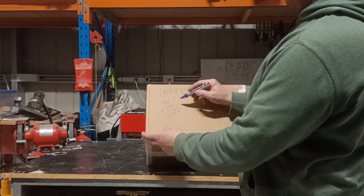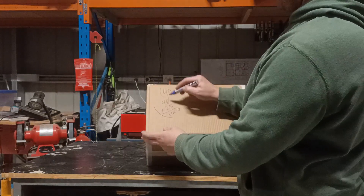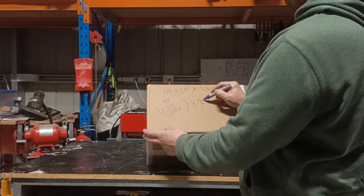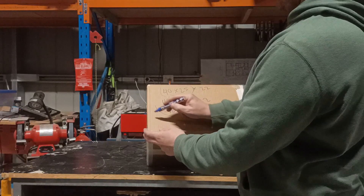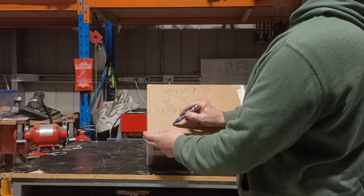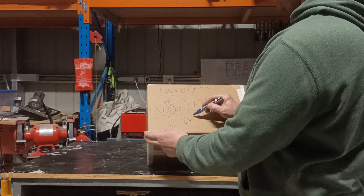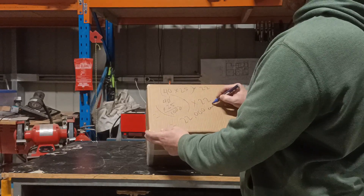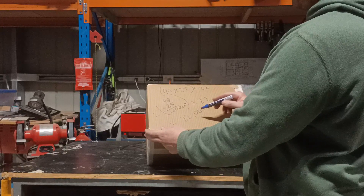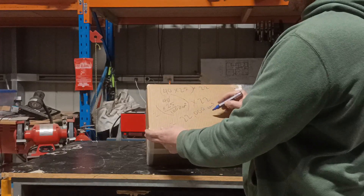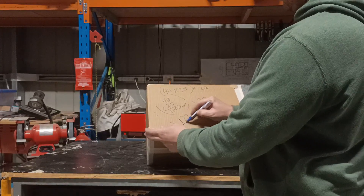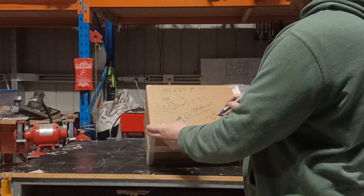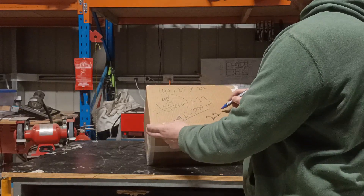Now all you've got to do then, because that's in your brackets, is times that by 22. So then you'll have 22,000 centimetres cubed. Now if you want to make that into litres, you just divide that by 1,000 — so you cross that out — 22 litres.